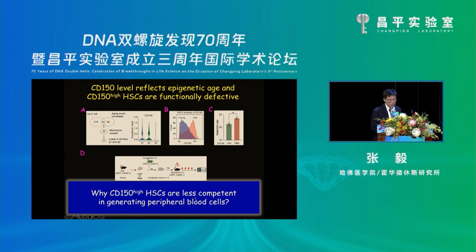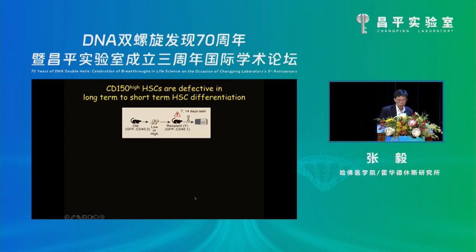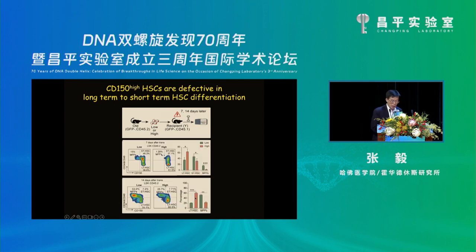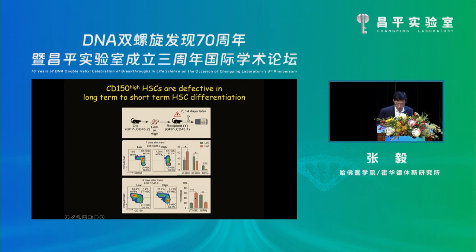The question is why CD150-high HSCs are less competent in generating peripheral blood. In differentiation analysis, we transplanted low and high populations into recipients and examined the bone marrow. CD150-high HSCs are stuck at the long-term HSC stage — the majority stays there and does not go through differentiation. While the CD150-low population successfully goes through differentiation and generates progenitor cells.